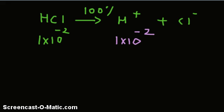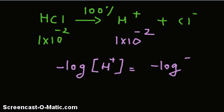So to calculate pH, we will substitute: negative log of H plus is equal to negative log of 1 into 10 raised to minus 2.